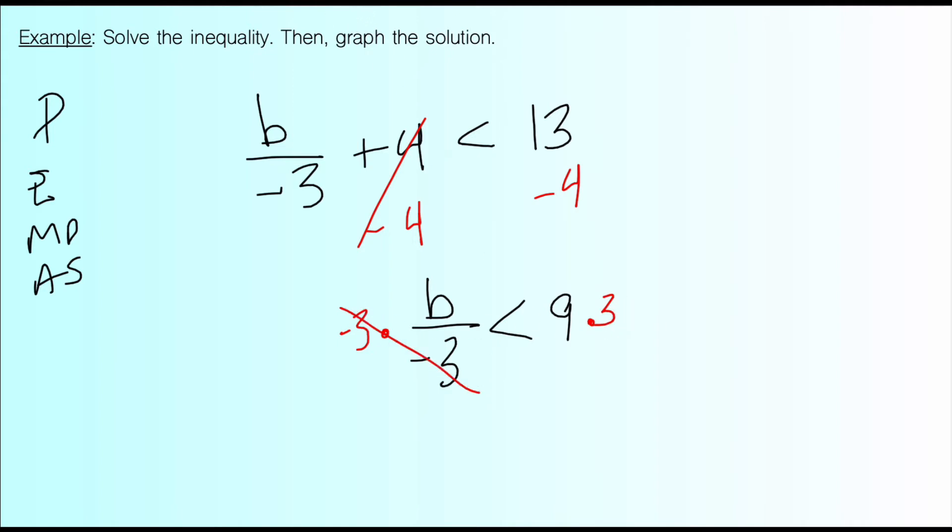And that's going to leave b divided by negative 3 is less than 9. And at this point, my last step is to undo divide by negative 3. That's going to get rid of this here and that's going to leave b. And on the other side, since I'm multiplying by negative 3, it leaves negative 27. Now, I hope that some of you are thinking of yesterday's lesson. When you multiply or divide by a negative number, that means I have to flip my inequality sign to keep the statement true. So I'm going to flip. And now it's b is any value that is greater than negative 27.